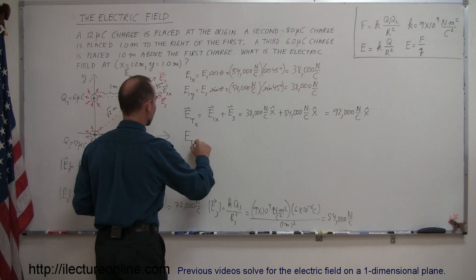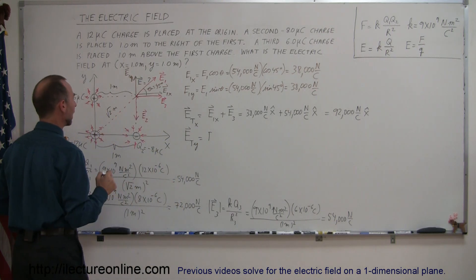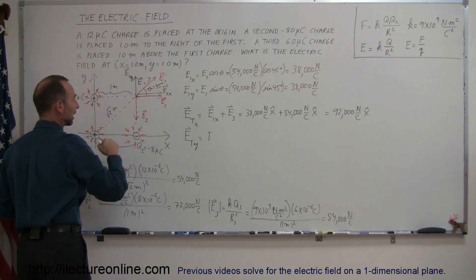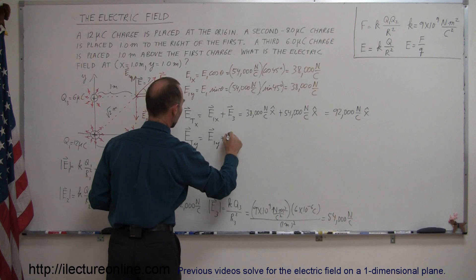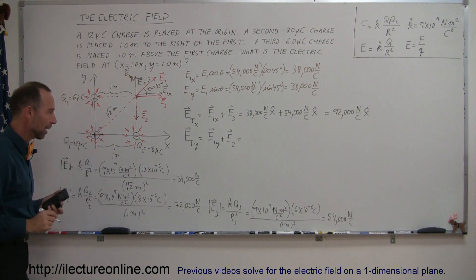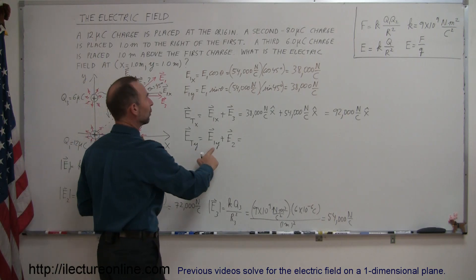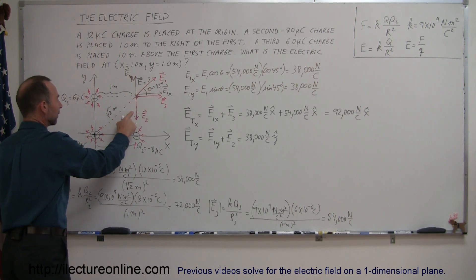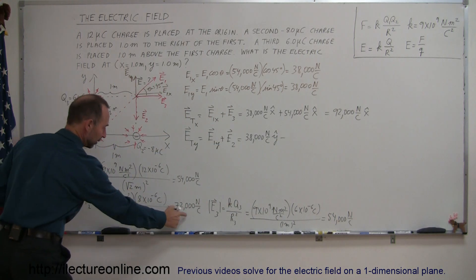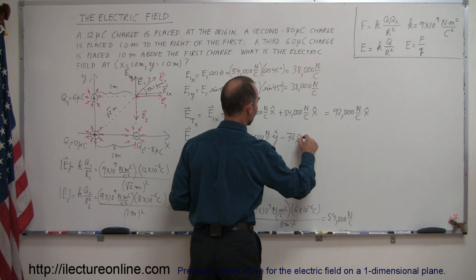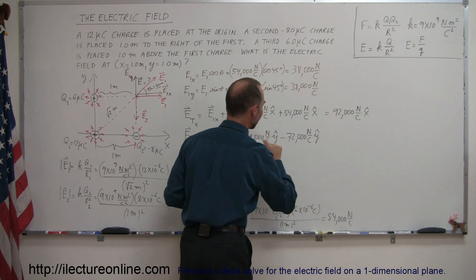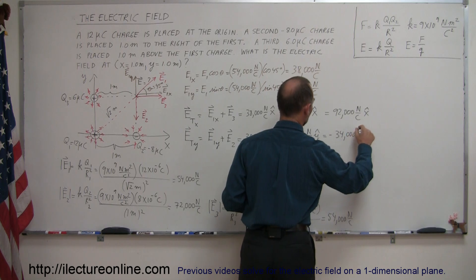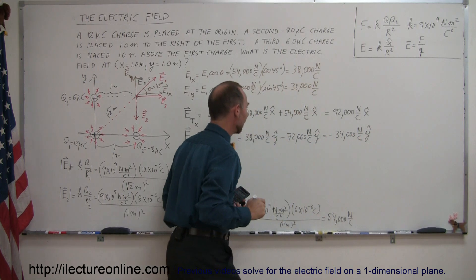Now we find the y-component of the total electric field. We have E1y, which is positive pointing upward, and E2, which is directed downward and therefore negative. So E_total_y equals E1y minus E2 = 38,000 N/C minus 72,000 N/C. The difference is minus 34,000, so E_total_y equals minus 34,000 newtons per coulomb in the y-direction, indicating a negative y-component.